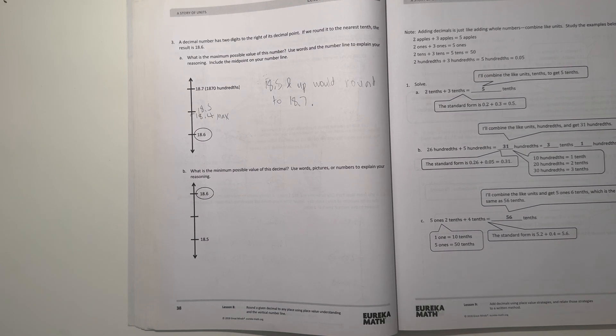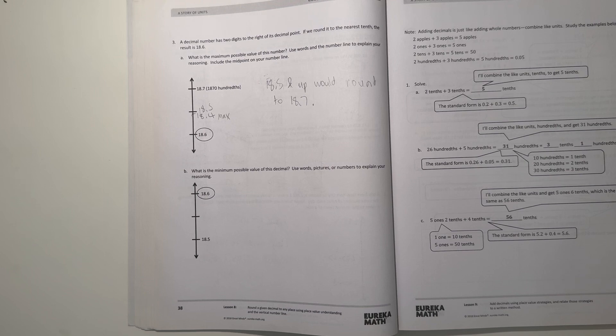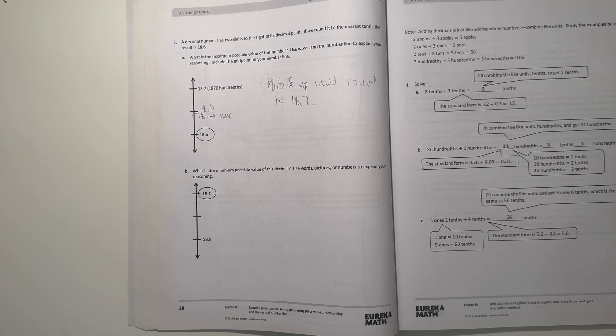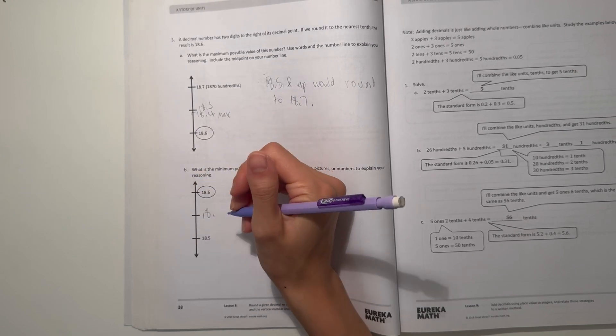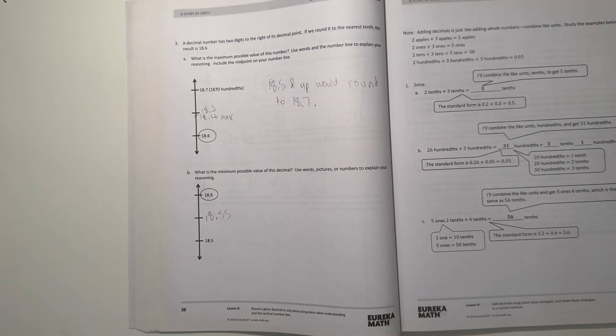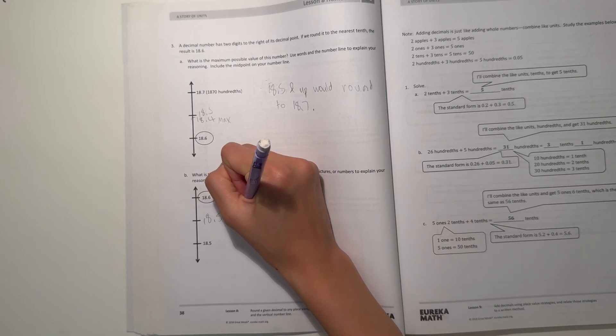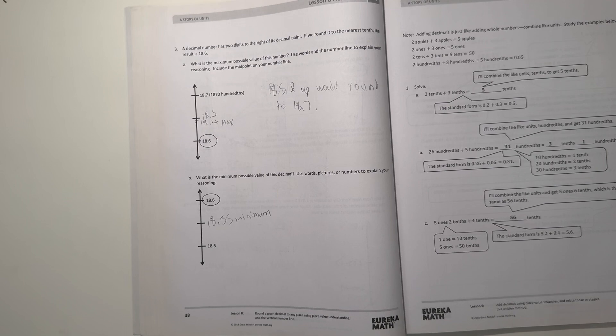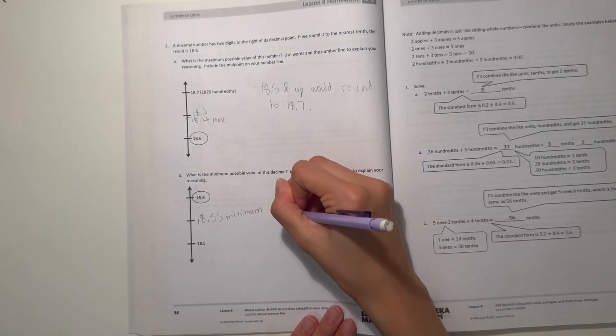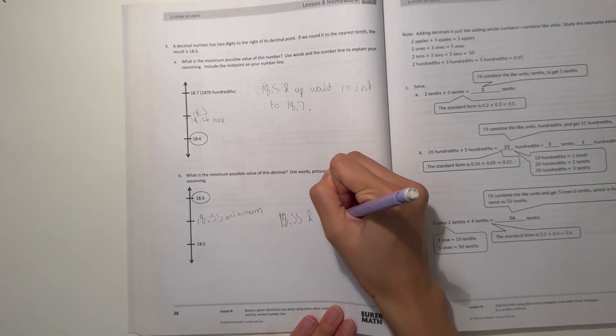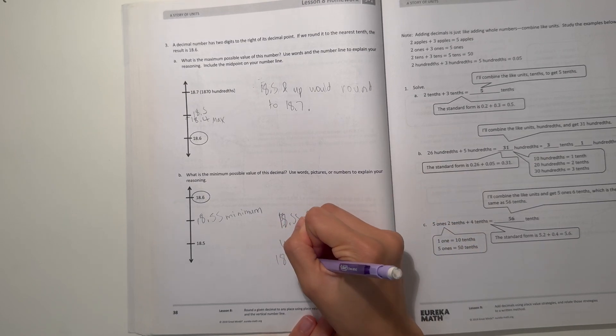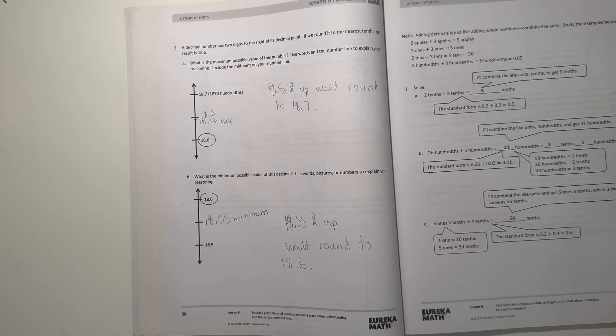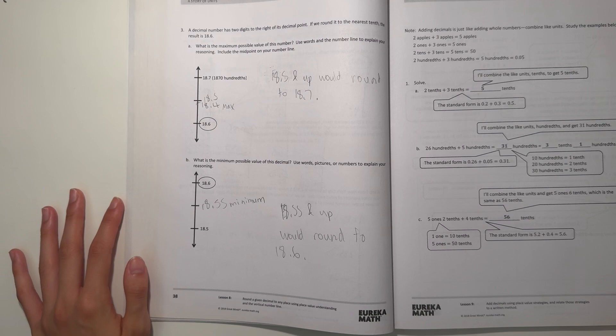And B, what is the minimum possible value of this decimal? Use words, pictures or numbers to explain your reasoning. So here we have 18.5, and since we know everything 18.55 and up would be 18.6, which means 18.55 would be our minimum, because if it was just one less like 18.54, it would round down to 18.5. So 18.55 and up would round to 18.6, so then that means 18.55 rounded to 18.6.